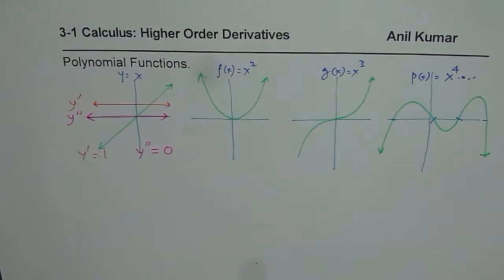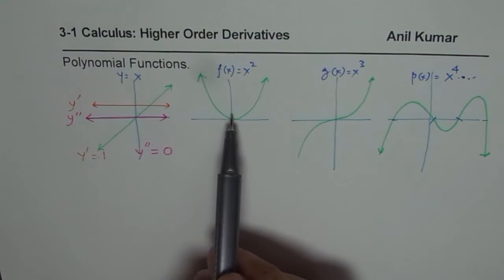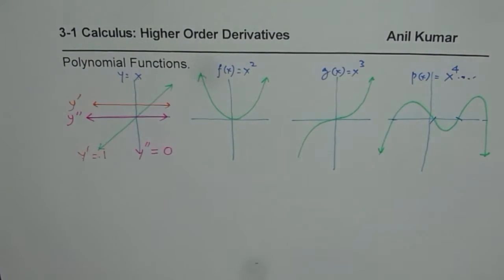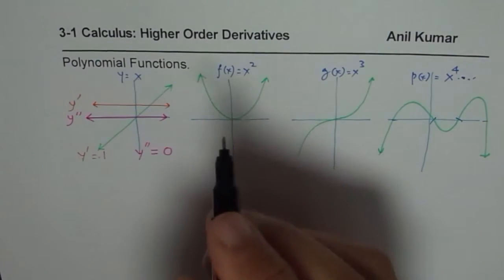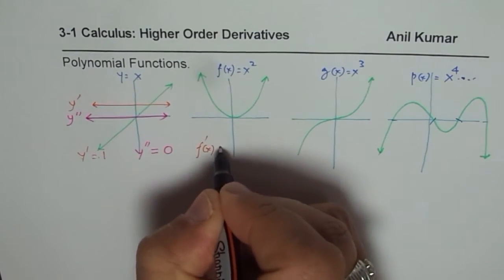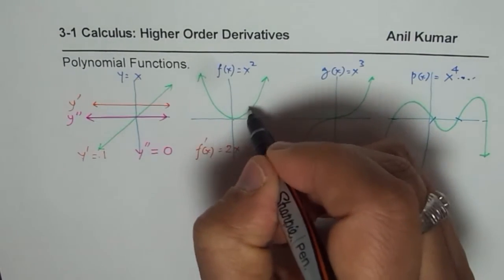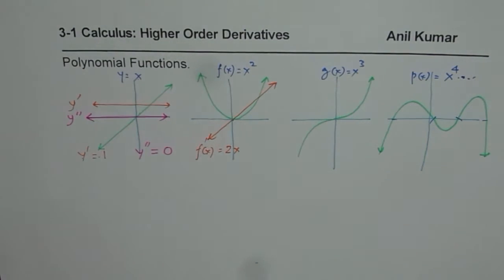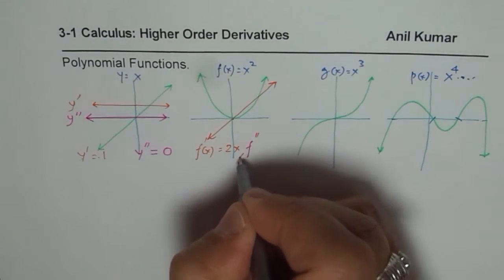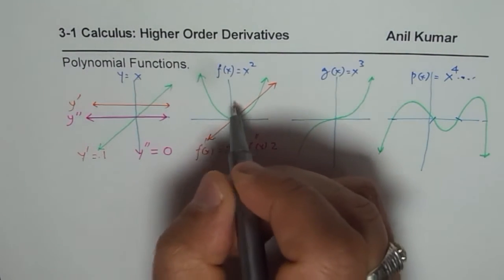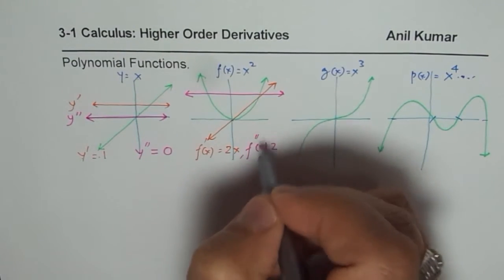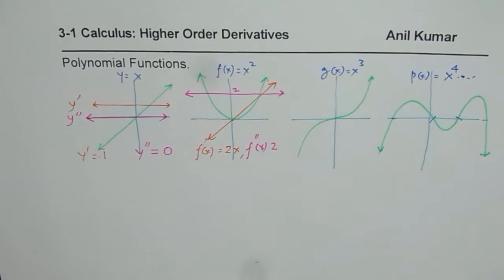Now reverting back to f of x equals to x squared: f-dash of x is going to be 2x. So 2x will be a line going through the origin like this. The second derivative f-double-dash of x will be 2, a constant, so that is a horizontal line drawn at 2. That is the second derivative.